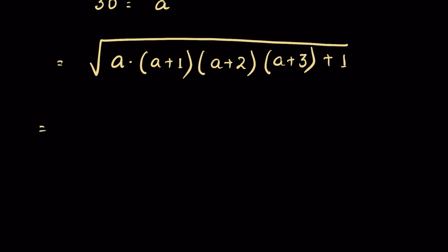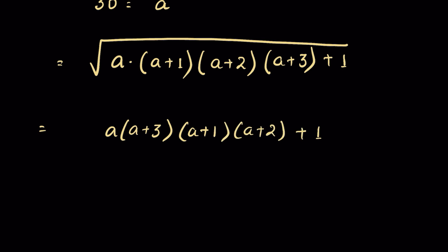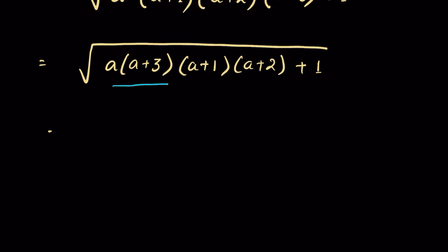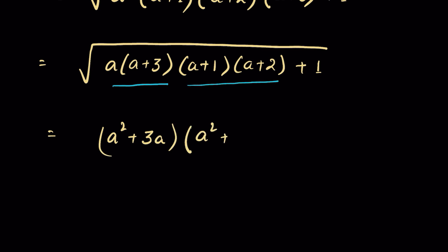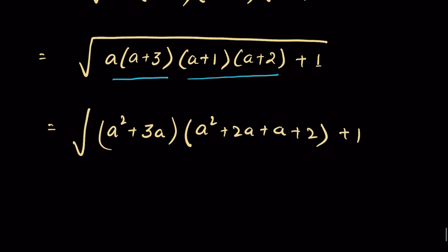Now let's rearrange it. We can write a times (a plus 3), and then (a plus 1) times (a plus 2) — no change to the question — then plus 1 under square root. Let's multiply these two: we get a squared plus 3a, then multiplying the other pair gives a squared plus 2a plus a plus 2.